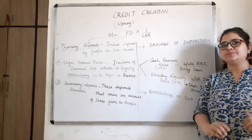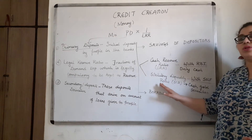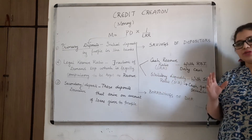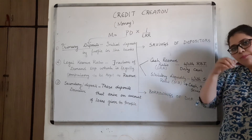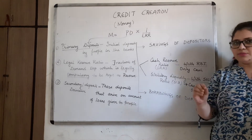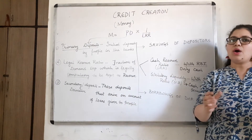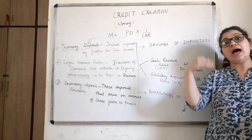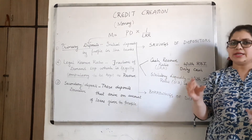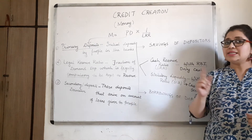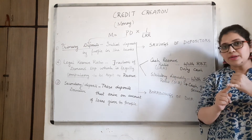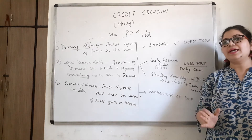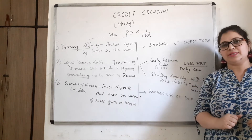The next legal reserve is called Statutory Liquidity Ratio (SLR). SLR is also a reserve, but this reserve the bank has to keep with itself — not with the RBI. It is also a percentage of primary deposits. So there are two reserves to maintain: one fraction to keep with the RBI in cash form (CRR), and another fraction to keep with the bank itself — but not in cash, in gold and other securities (SLR).